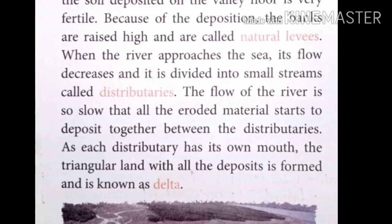When the river approaches the sea, its flow decreases and it is divided into small streams called distributaries. Each distributary has its own mouth. All the eroded materials start to deposit together between the distributaries, forming a triangular-shaped landform called a delta.